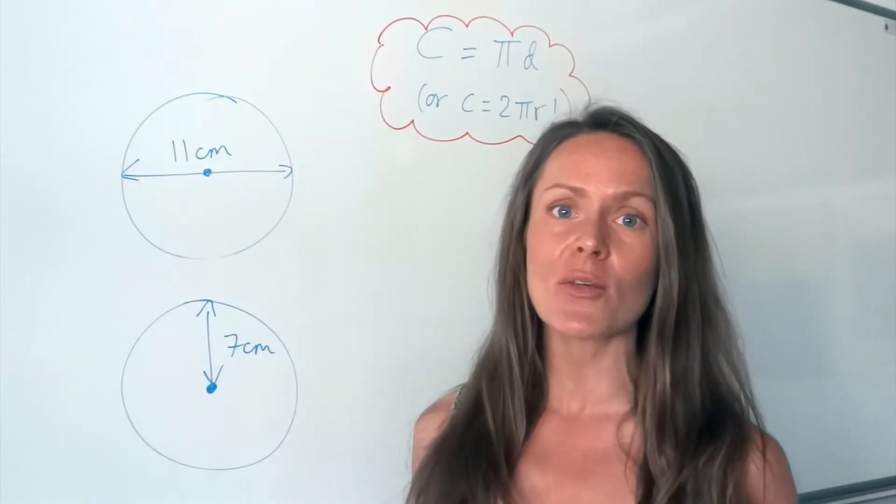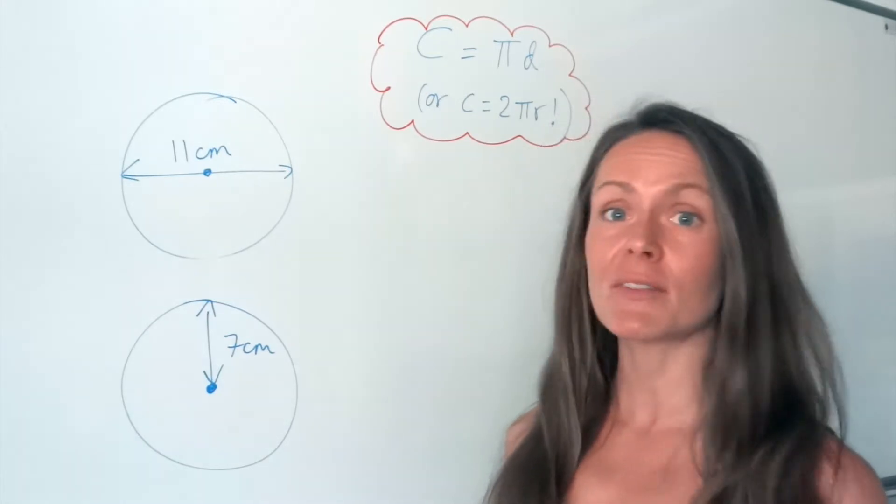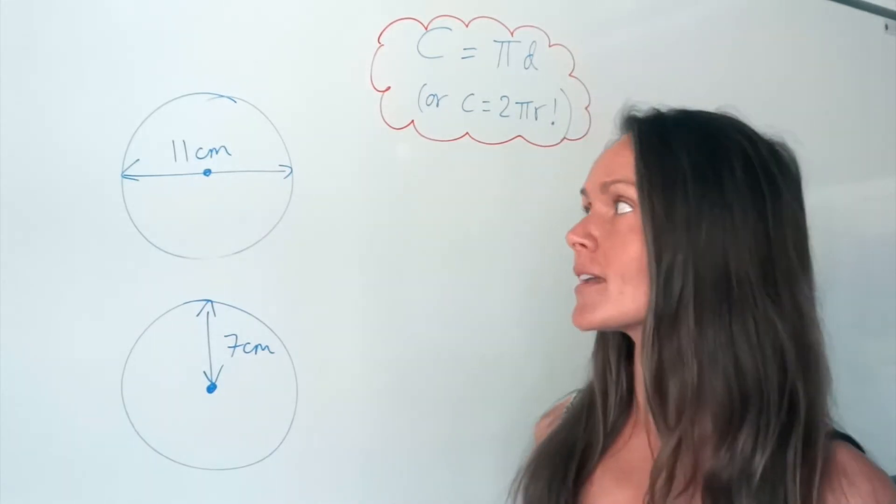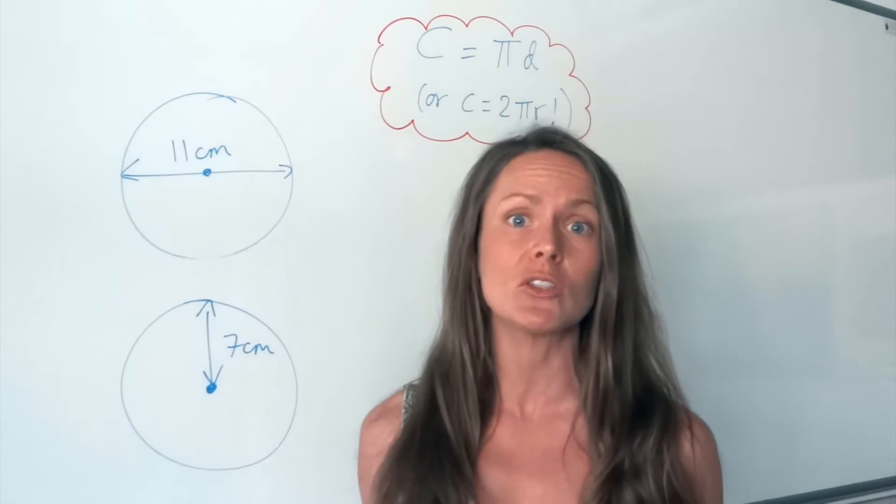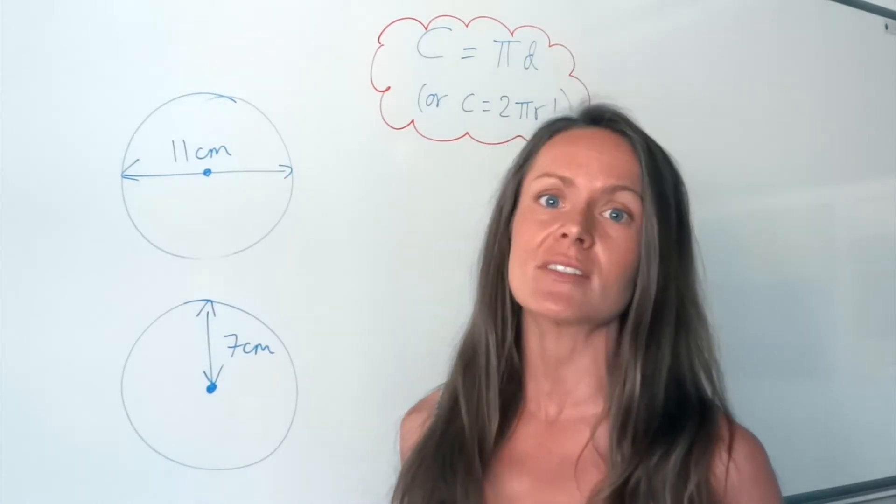So circumference is just another word for perimeter, but specifically for circles. If you're working out the perimeter of a circle, we would usually use the word circumference instead of perimeter.